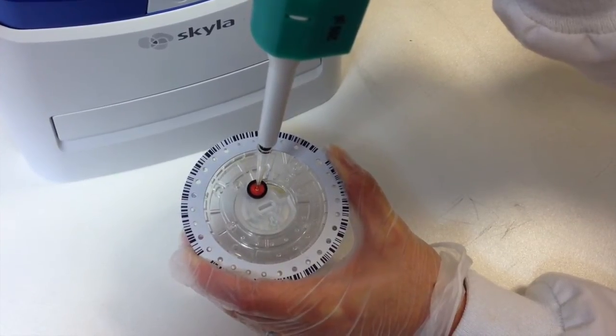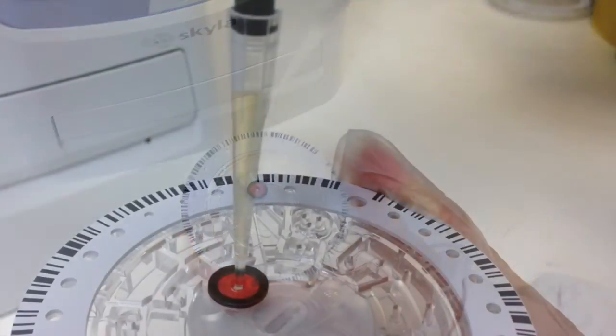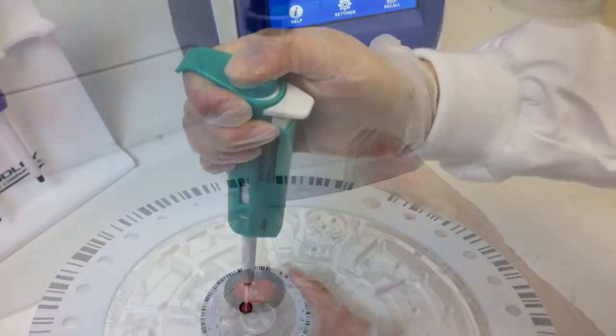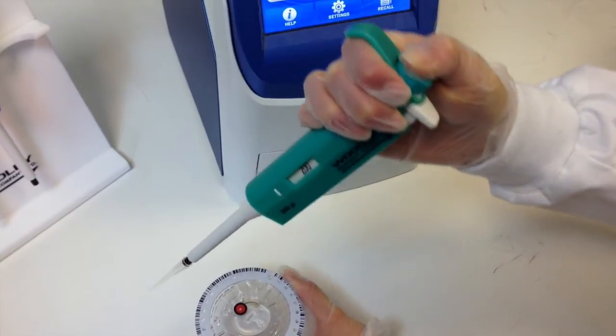Keep the rotor level and the pipette tip perpendicular to the surface of the rotor. Gently push down on the plunger to the stop position. All of the sample should have been expelled into the sample chamber.